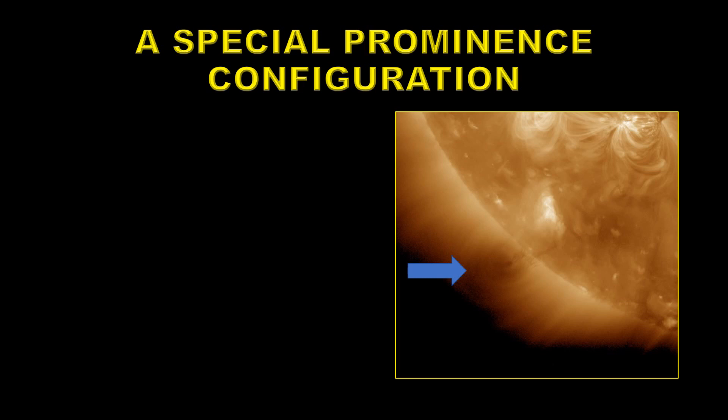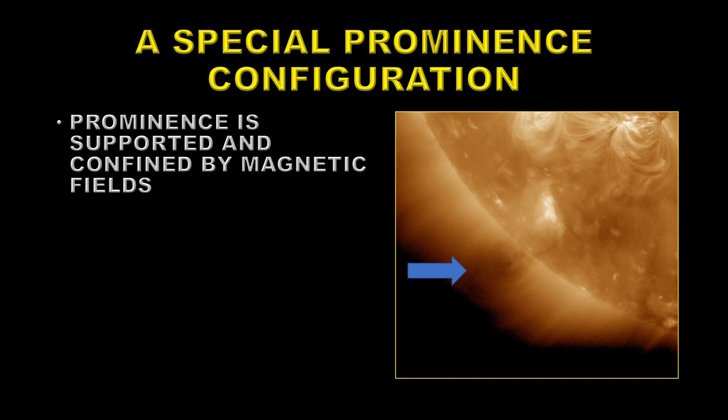A prominence in the iron 12 is shown here with the blue arrow — it's a dark feature, just like before, but it has this sort of bulbous shape. A prominence is supported by and confined by magnetic fields, so you can see the large loops that overlay it and stop the prominence from lifting away. The cool material suspended in the hot corona must also be insulated from that hot corona by the magnetic fields.